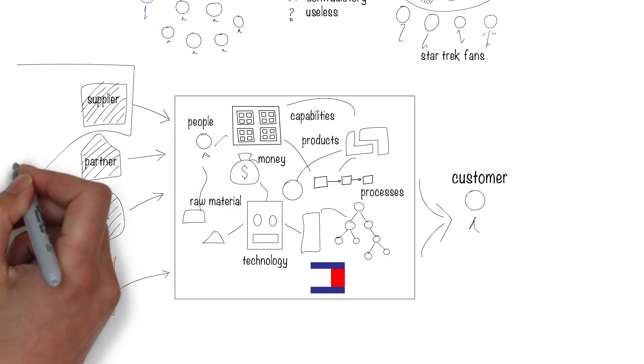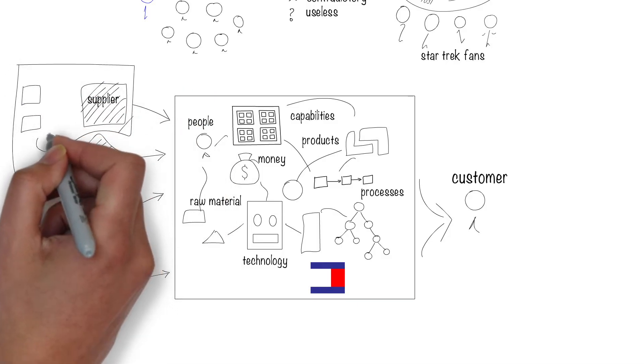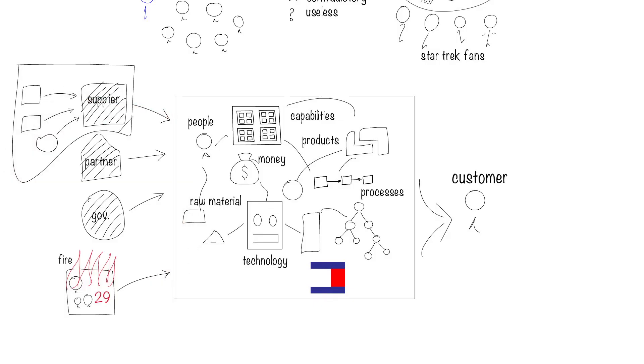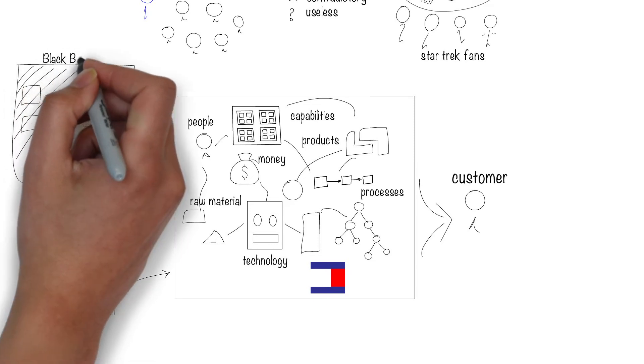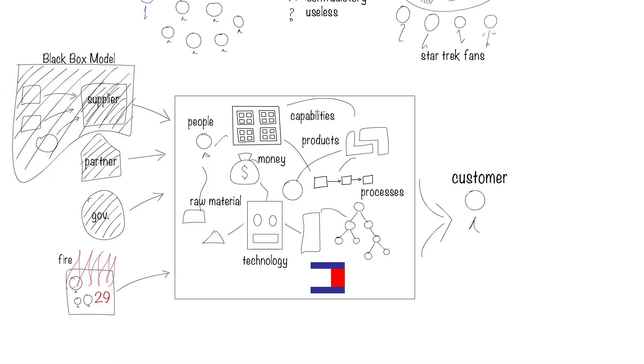Sometimes black box modeling is good. You can't possibly model everything about every part of the supply chain. That's just too much with little value to show for it.